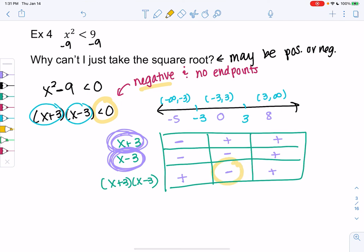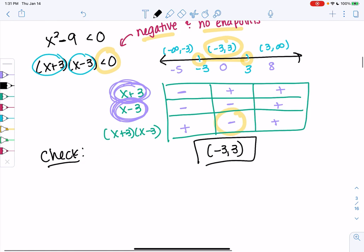In this case, we wanted negative and no endpoints. So it'll be that middle interval of negative 3 to 3. My solution would be any number in between negative 3 and 3. So negative 2 is a solution, 0 is a solution. Anything in that interval is a solution. We could check: negative 2 squared is 4, and that's less than 9. 1 squared is 1, which is less than 9. So anything in between negative 3 and 3 should make this inequality true.